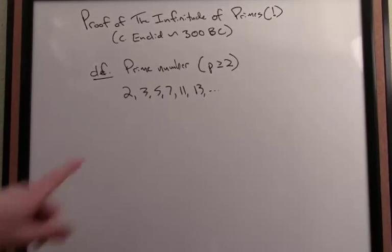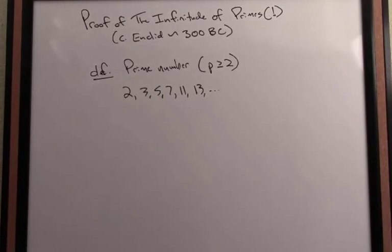And you want to notice, for instance, the number 9 is not on this list. It's called composite because it's divisible by 3, so it's not only divisible by 1 and itself.